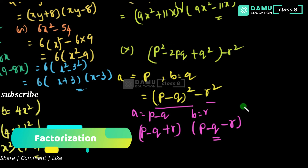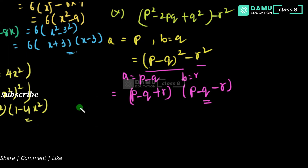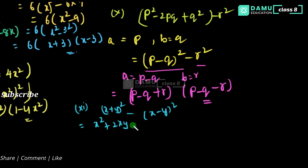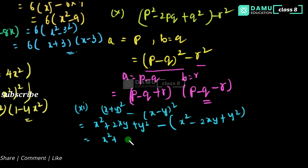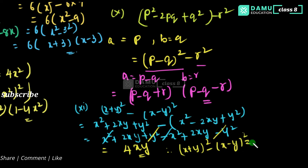The eleventh and last one is x plus y whole squared minus x minus y whole squared. Expanding both: x squared plus 2xy plus y squared minus x squared minus 2xy plus y squared. The x squared terms cancel, the y squared terms cancel, and we are left with 4xy. Therefore, x plus y whole squared minus x minus y whole squared always equals 4xy.